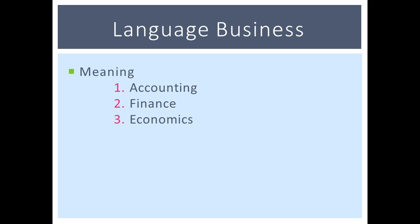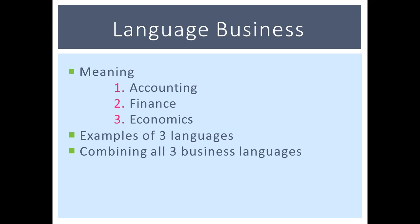As an example of the different business languages, imagine a company faced with the decision of whether to produce a new product. For accounting, based on historical information, past financial statements could tell you the average cost of production including labor, rent, and overhead. For finance, using financial statements in a forward-looking lens, the analysis would look at the true cost and cash flows required. For economics, one would properly price the new product and forecast demand based on supply and demand as well as substitute goods and price sensitivity.